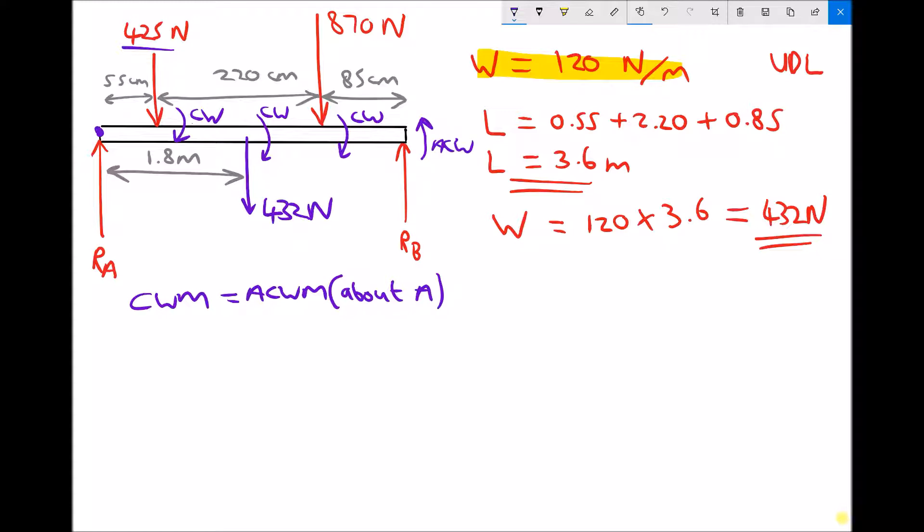So our clockwise moments then, taking each force in turn, we've got 425 newtons at a distance of 55 centimeters. But we need to put that into meters, so times 0.55. We then have a 432 newton force, or the weight, acting at a distance of 1.8 meters in the center of the beam. We then have an 870 newton force. And just take care here, because it's the distance back to the support, which is 55 centimeters plus 220 centimeters, giving us 275 centimeters in meters is 2.75 meters.